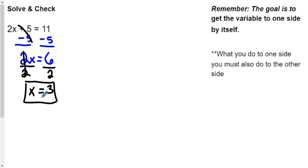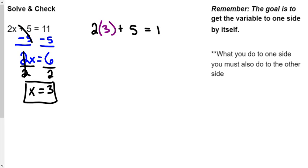Six divided by two is three — there's your answer. Now the check is nothing more than figuring out if you have the right answer. We're going to take our answer X equals three and plug it back into the original equation to see if it works. I'm going to put the three in parentheses so we can see where the X would have been, but it's still supposed to multiply the two. Two times three is six, and we know that six plus five equals eleven — so yes, it worked.